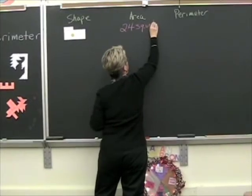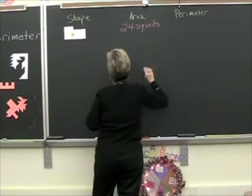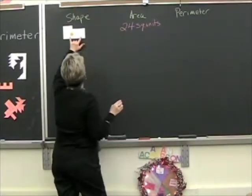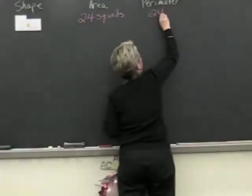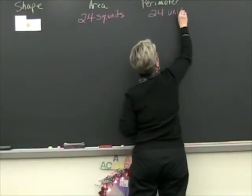On this particular shape, the perimeter was 24 units.